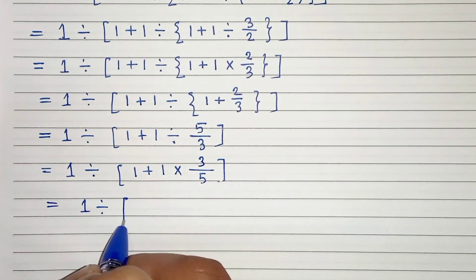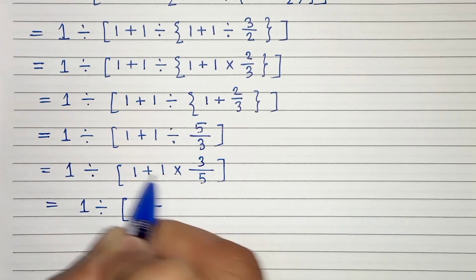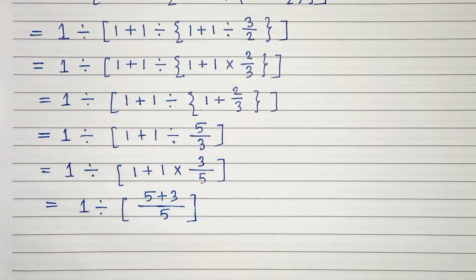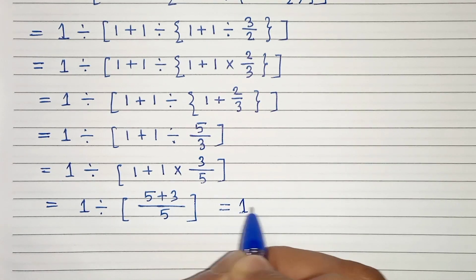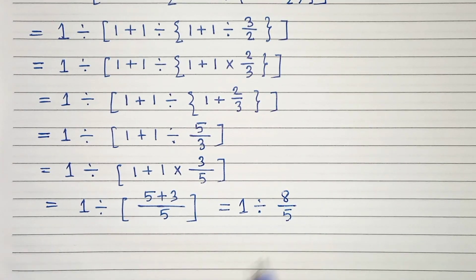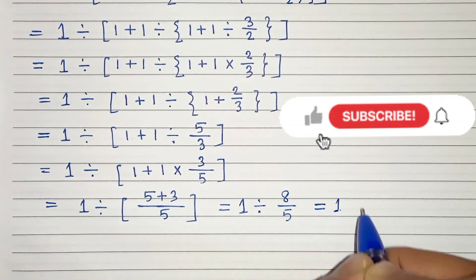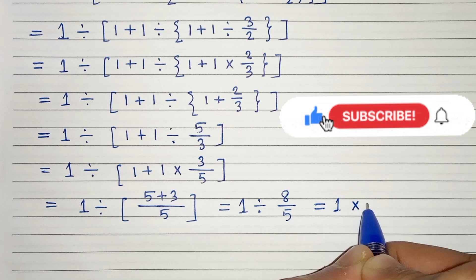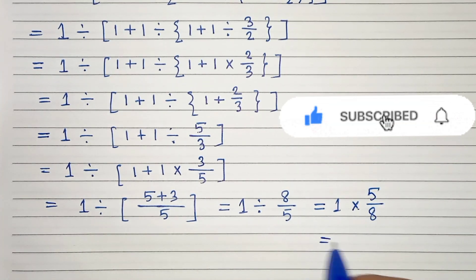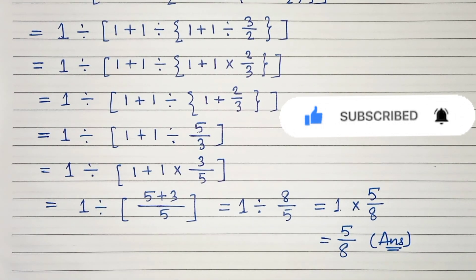In the next step: 1 divided by 1 plus 3 by 5, which is 5 times 1 plus 3 over 5, so this equals 1 divided by 8 by 5. Then division written as multiplication gives 8 by 5 becomes 5 by 8. So our answer is 5 by 8. Thanks for watching.